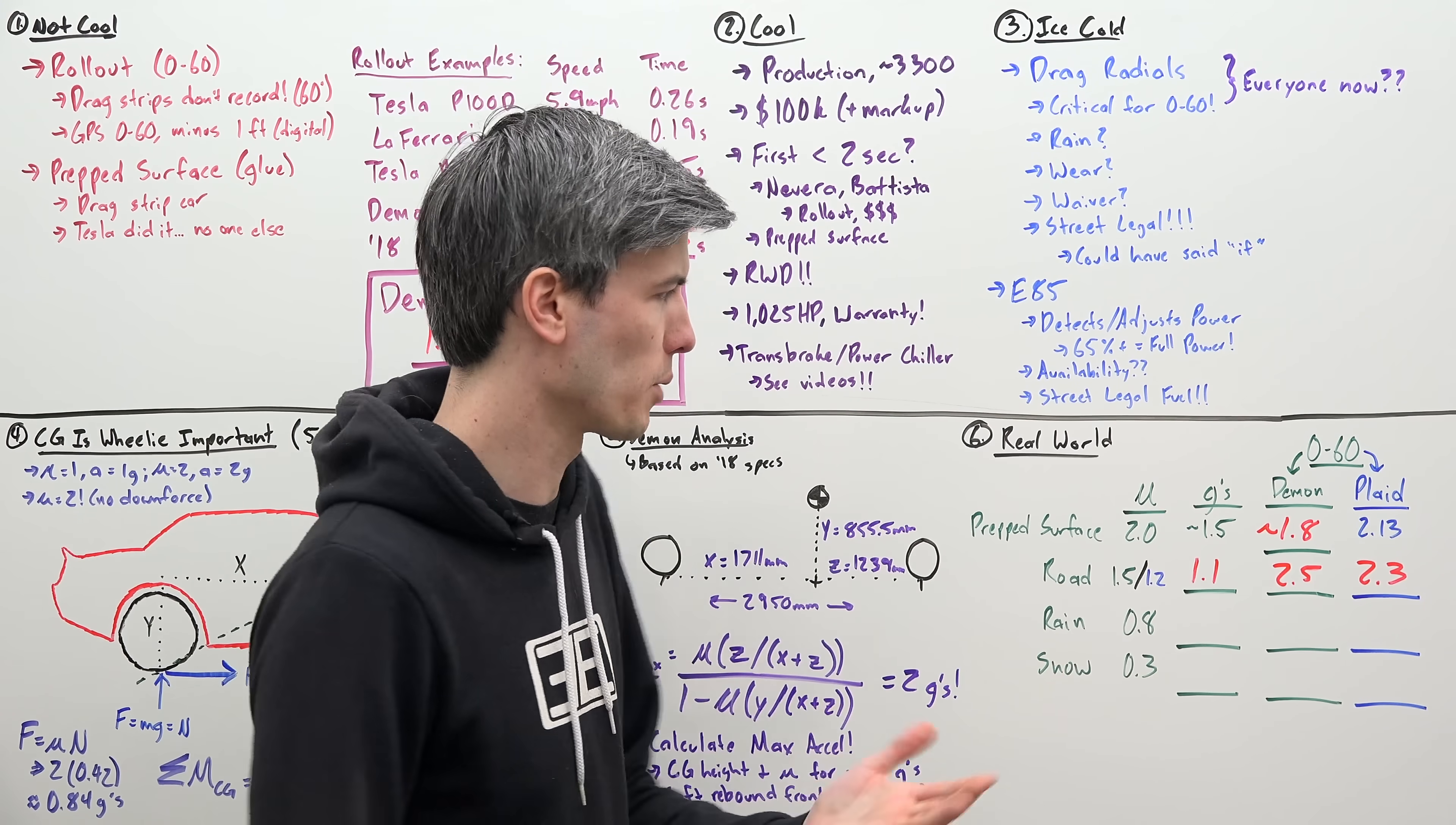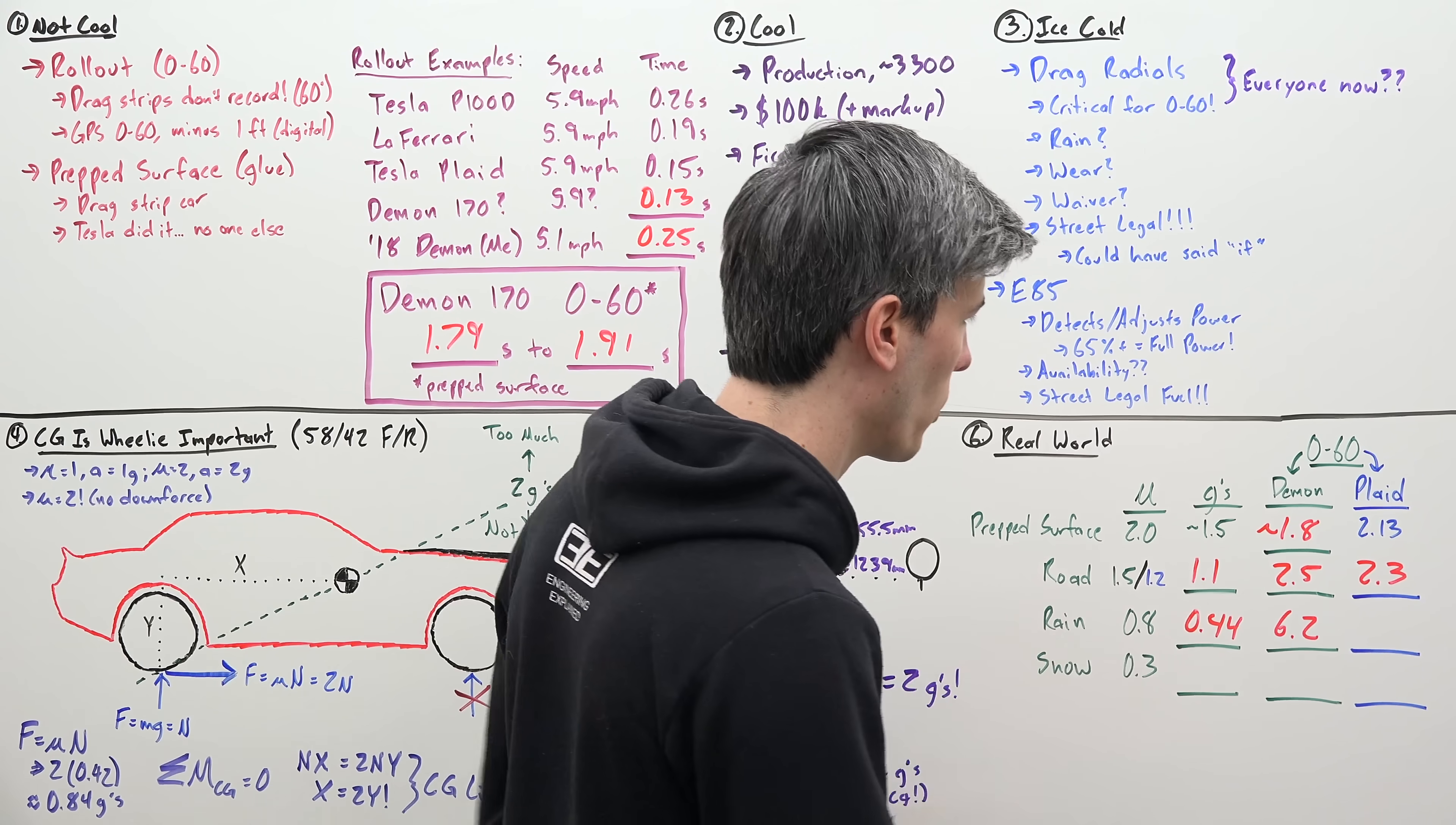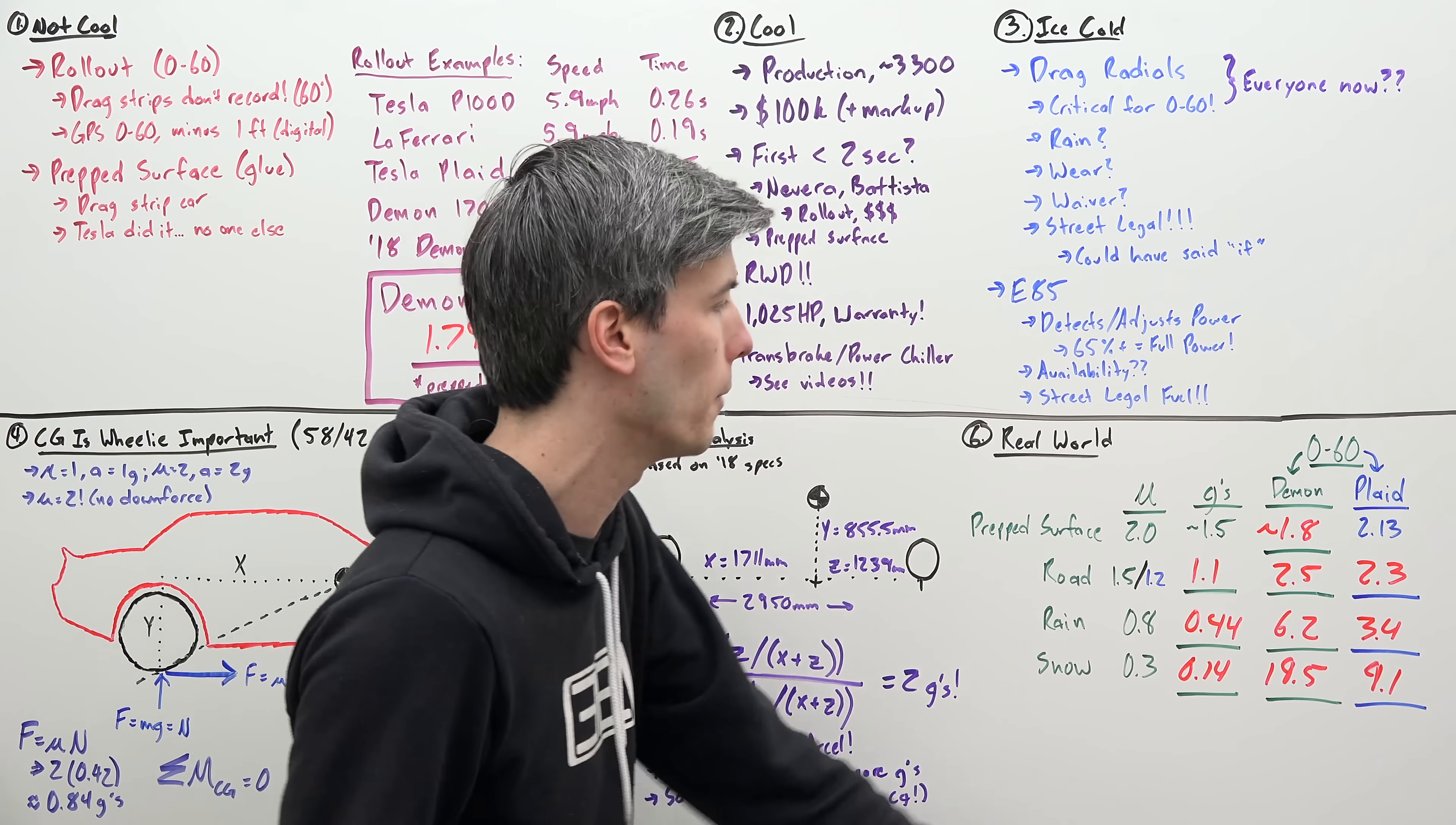Now, just for fun, let's look at some other circumstances. And no, you shouldn't be driving your Dodge Demon in the rain or the snow. But theoretically, if you were to, what are some of the numbers that you can expect? So if you're driving in the rain and you have a frictional coefficient of 0.8, the maximum acceleration that the Dodge Demon is going to be able to achieve is 0.44 G's, giving it a zero to 60 of 6.2 seconds. Compare that to the Tesla Model S Plaid. If you've got that frictional coefficient of 0.8, it's going to be able to achieve a zero to 60 in 3.4 seconds because it's all wheel drive. In the snow, things get even worse. So our maximum acceleration, given a frictional coefficient of 0.3 is now just going to be 0.14 G's and our zero to 60 is 19.5 seconds versus the Tesla at 9.1 seconds. So real world in basically every condition, an all wheel drive vehicle that has plenty of power is going to be quicker.